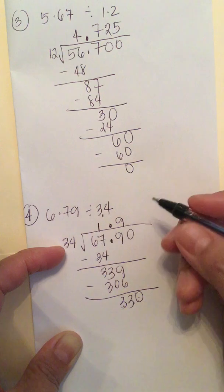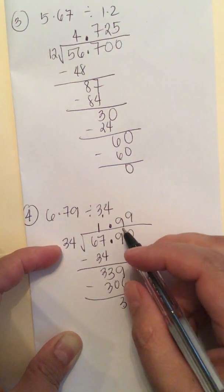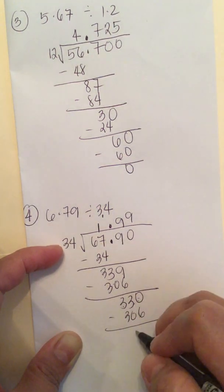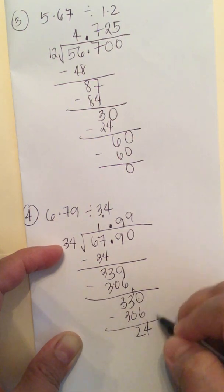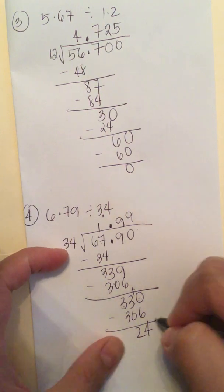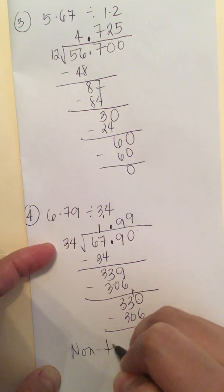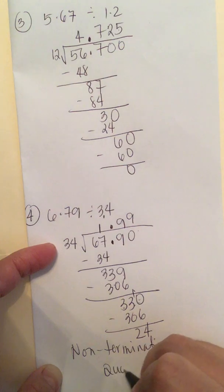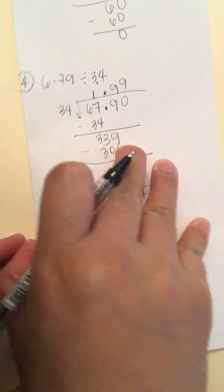330 divided by 34 is still 9, and 9 times 34 is 306 again — it keeps repeating. So the quotient is 1.9 and then it repeats, so this is a non-terminating quotient.